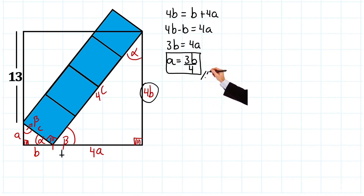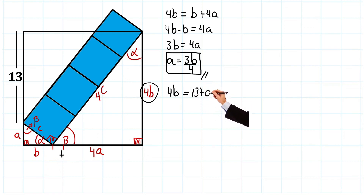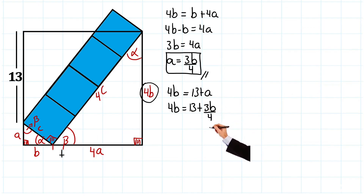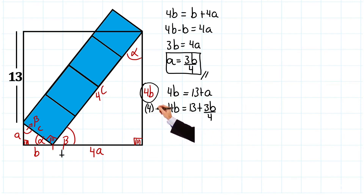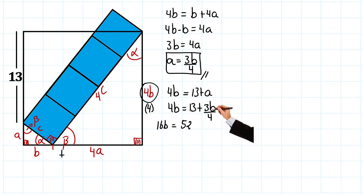Fantastic, we've already obtained the value of a in terms of b. Now notice that 4b is also equal to this side here, and this side here would be 13 plus a. So we have: 4b = 13 + a. Let's replace a with 3b over 4. To simplify, we multiply the entire equation by 4: 4 times 4b gives 16b, 4 times 13 gives 52, and 4 times 3b over 4 simplifies to 3b.